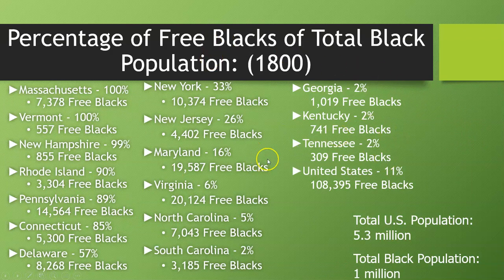Here's something to keep in mind: there is a percentage of freed Black people out of the total population in 1800. In Massachusetts, 100% of African Americans are free — that's 7,378 people. Vermont is the same; New Hampshire is 99% with 855. In Virginia, only 6% are free, which is 20,000 — showing how many more are enslaved there compared to Massachusetts. North Carolina is 5%, Georgia is 2%, and Kentucky and Tennessee similar. In total in the United States, about 11% are free — roughly 108,000 out of one million.